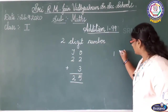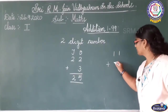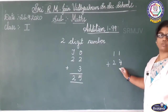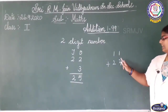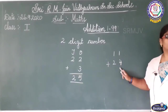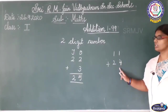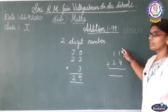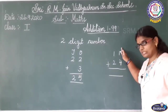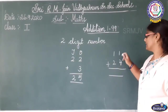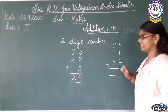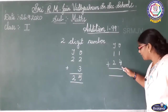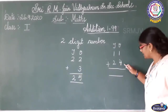I am writing here 11 plus 24. Now we have to add. First, what you have to write? Ones place, then tens place. First, what you have to do? You have to add ones place.